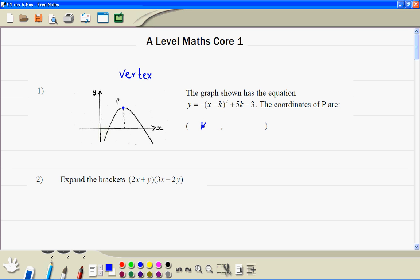And the y coordinate, you write the whole thing, whatever is without the bracket, so that's 5k minus 3.